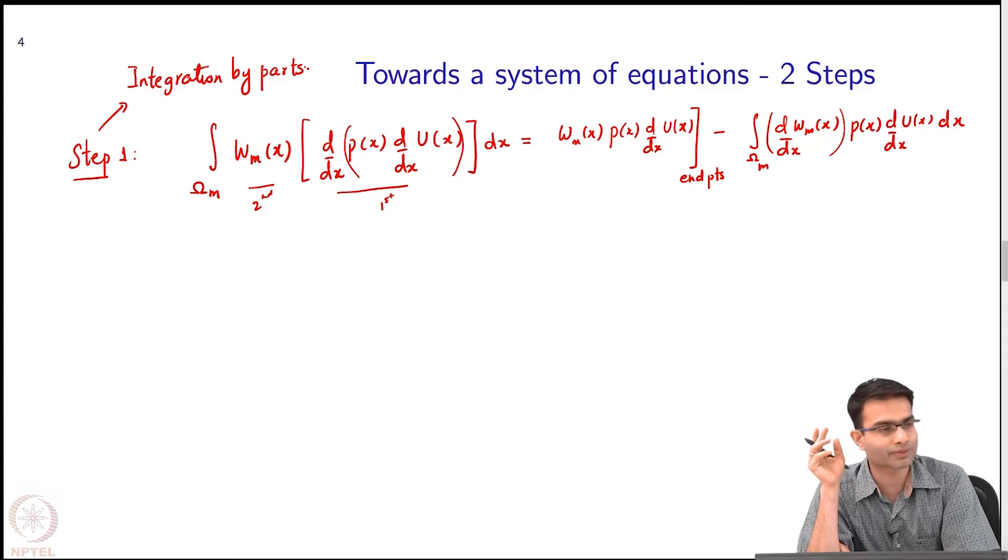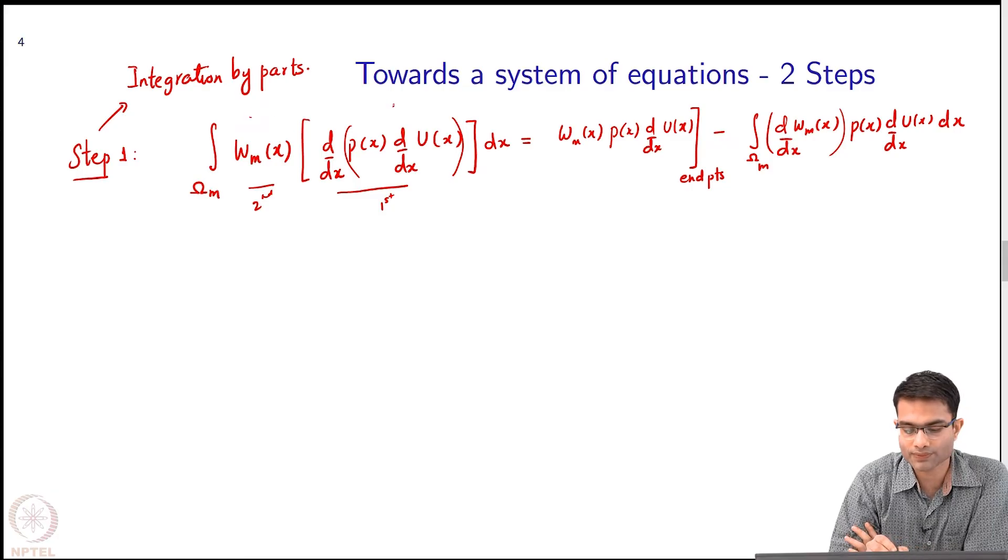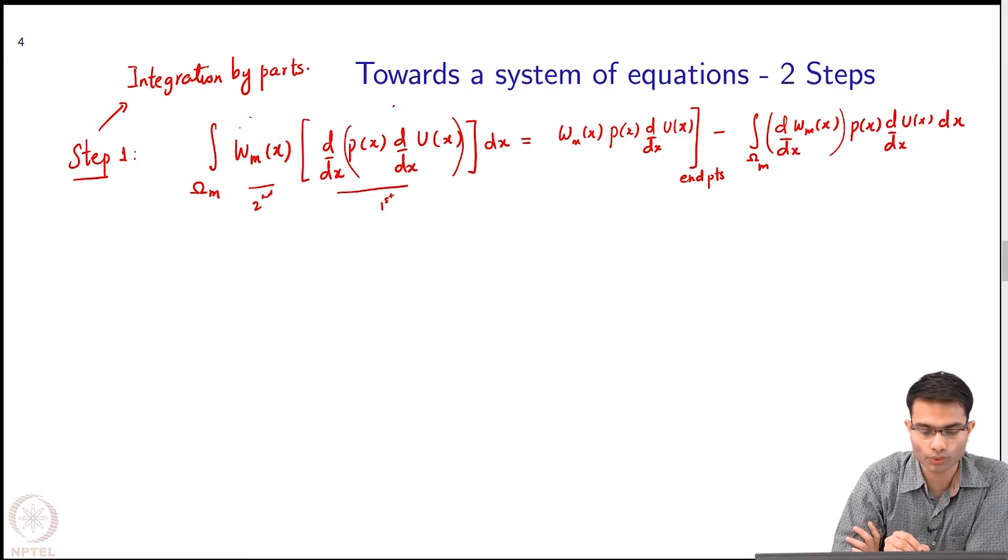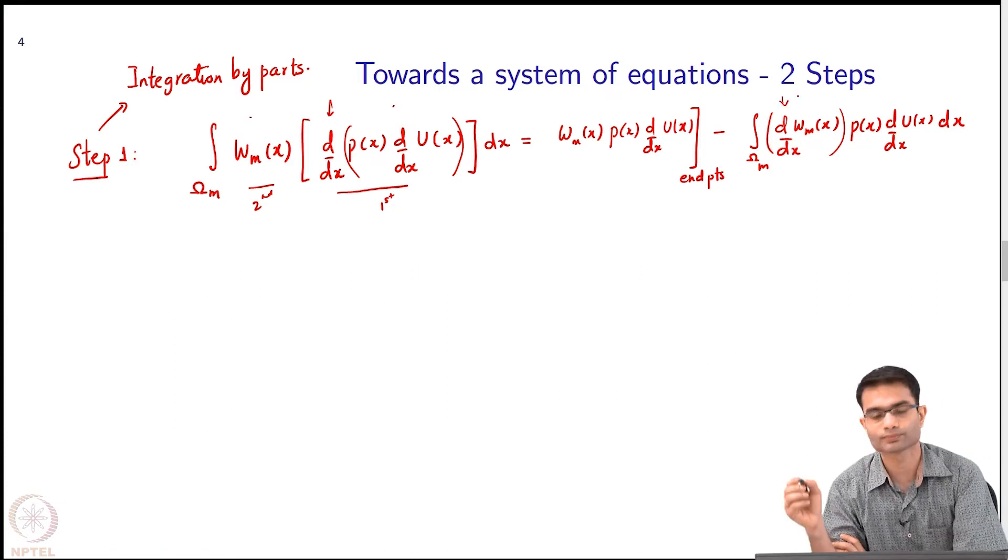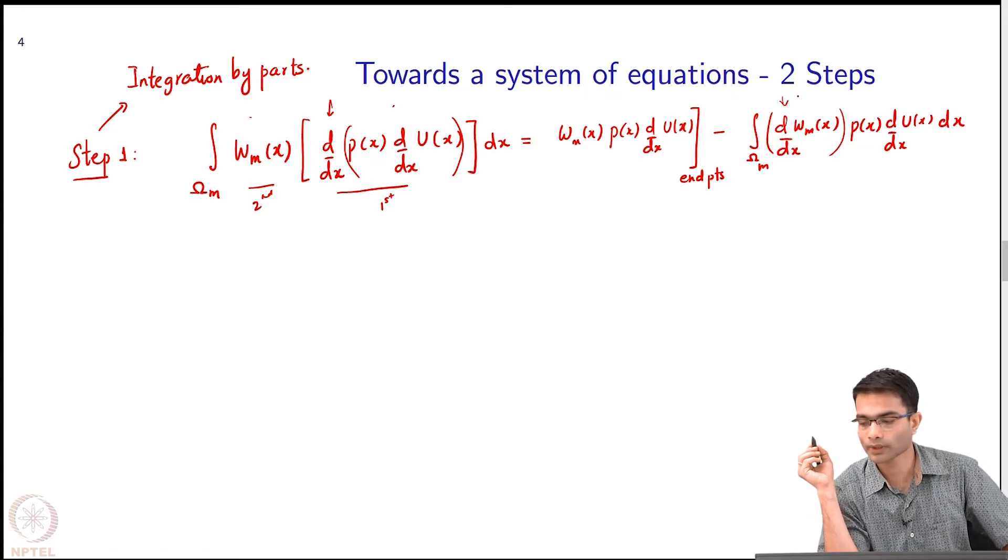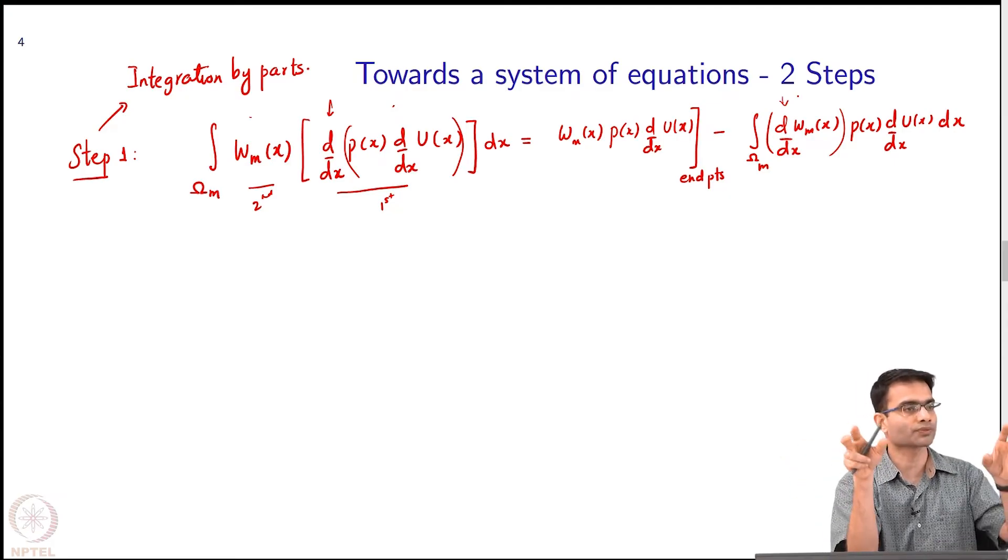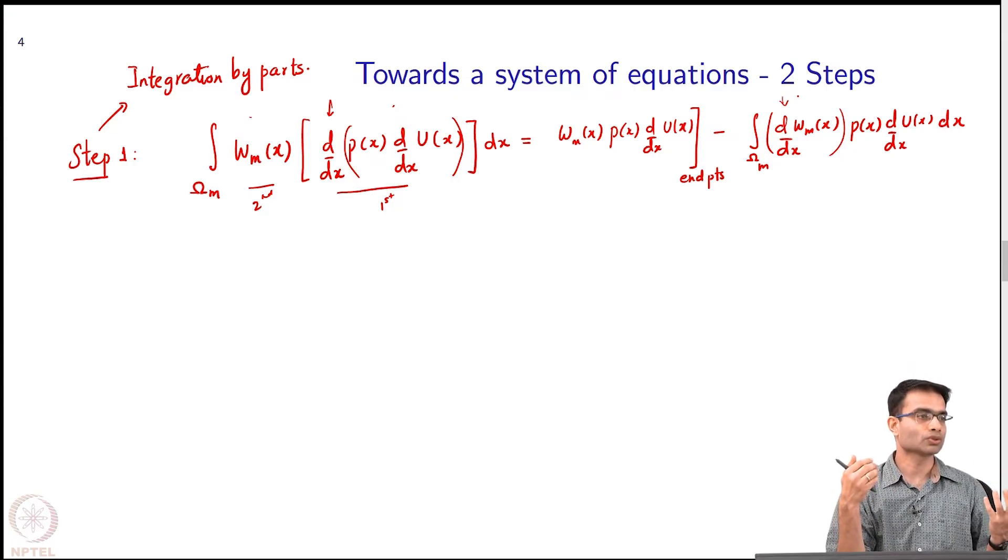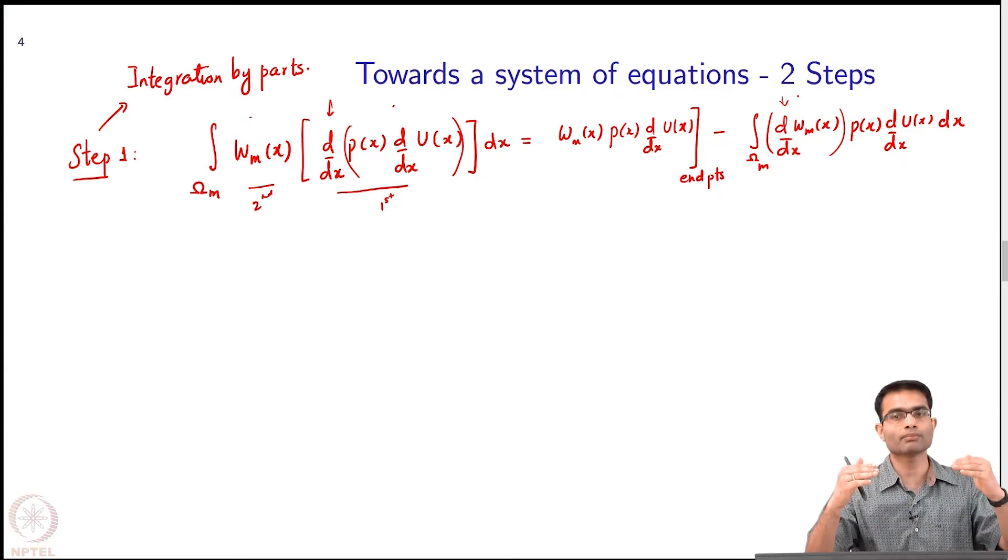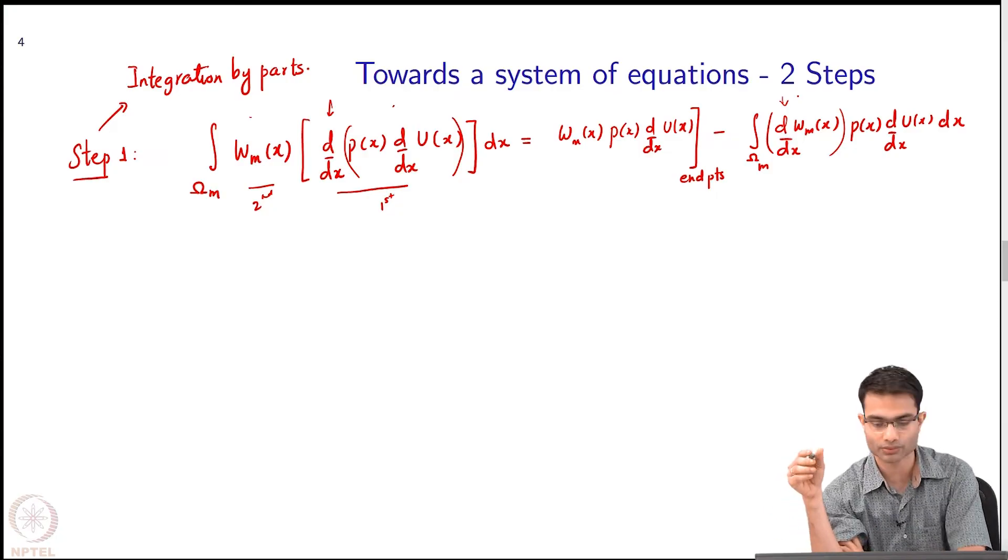But notice, apart from ease of integration, what have you actually done? You have in some sense, if you look at this expression, you have transferred one derivative from u onto w. This derivative which was acting here on p(x) and u'(x) has now been transferred onto w. And that gives a nice kind of symmetry because you know before we even get into it, in FEM WM and UM they are going to be chosen from the same family, it is Galerkin's method, the testing function and the basis function is the same. I have to only worry about WM and its derivatives, no higher order term is coming over here because it is only du/dx not d²u/dx².